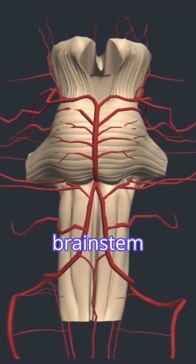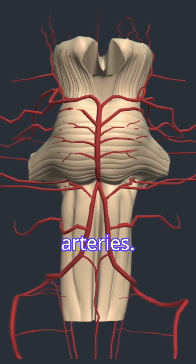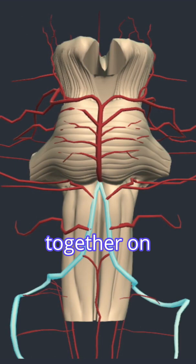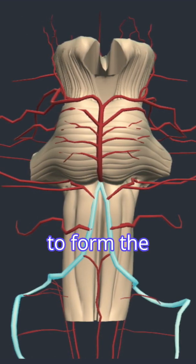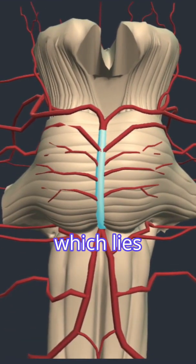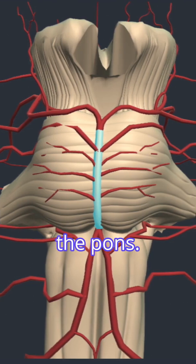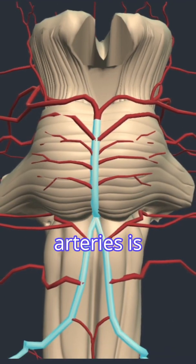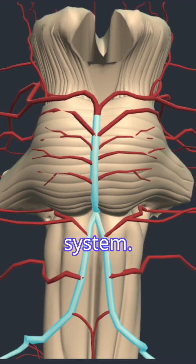In the brainstem, we will focus on the vertebral arteries. The paired vertebral arteries come together on the anterior brainstem to form the basilar artery, which lies in the basilar groove on the pons. The network formed by the vertebral and basilar arteries is called the vertebral-basilar system.